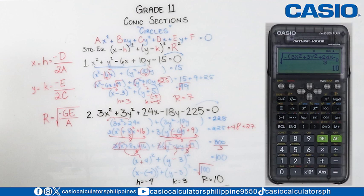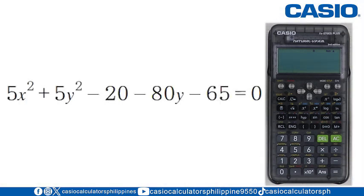And that's how you perform finding the radius and the center of a circle given its general equation using our calculator Casio FX570ES plus transparent. Now, try to solve the problem number 3. Comment down your answer below. Can you determine the center and the radius?